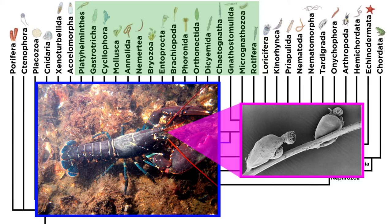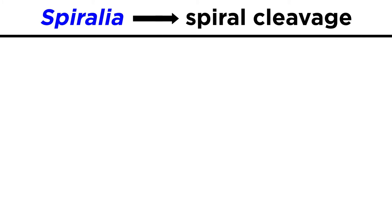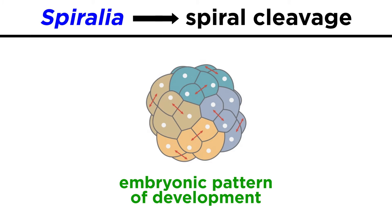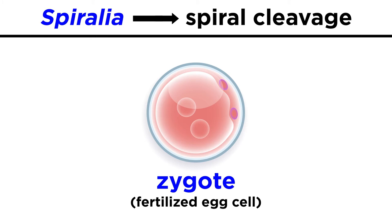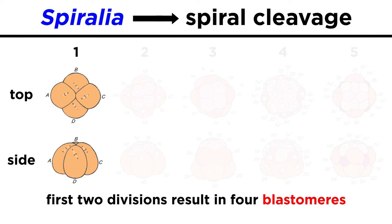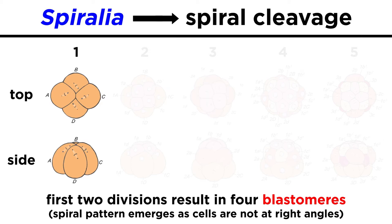The term Spiralia refers to spiral cleavage, which is a pattern of development that occurs in a developing embryo. Spiral cleavage begins after a zygote, or fertilized egg cell, begins to divide. The first two divisions of the zygote result in four blastomeres, or macromeres, that each represent a different quadrant of the embryo.